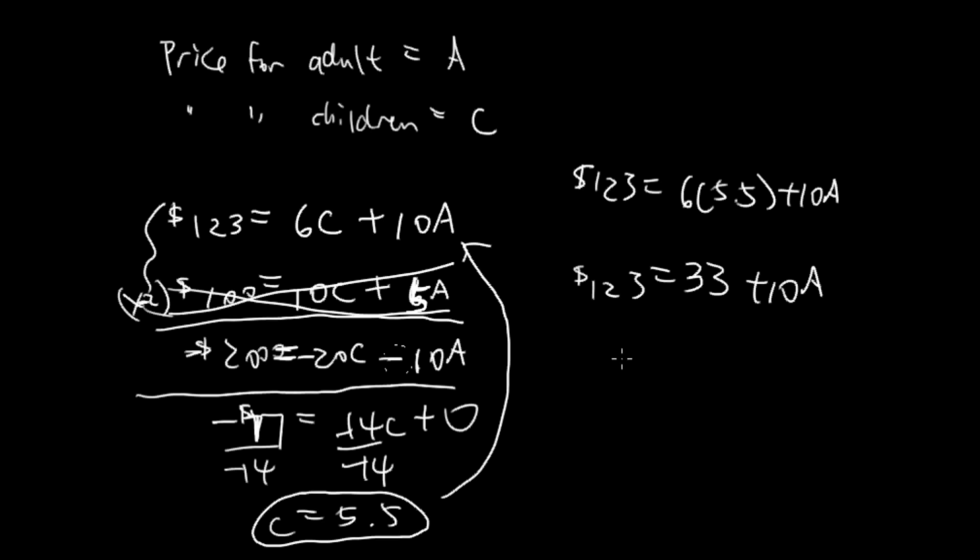Subtract the 33 over, we have 90 equals 10A, and we have A equals 9. Here's the final answer.